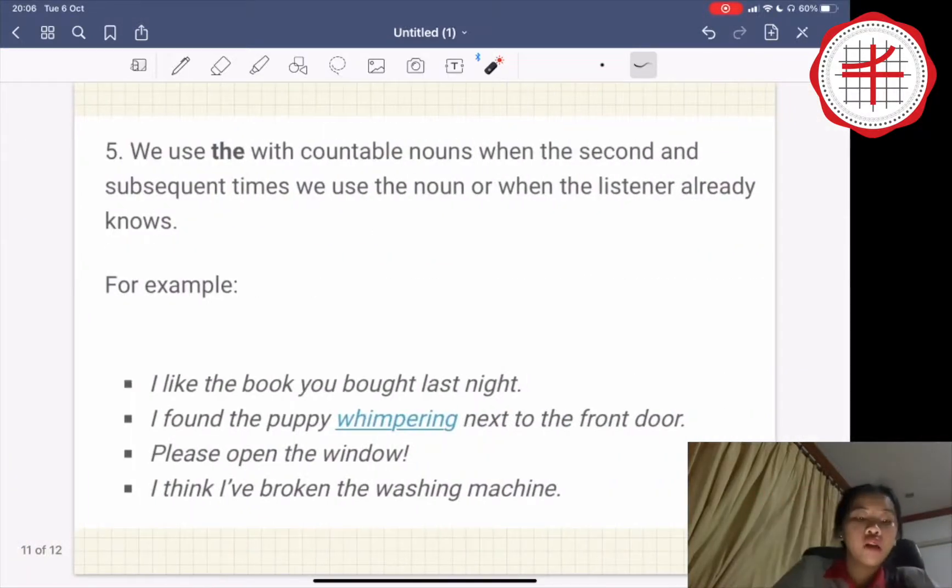The last one, we use the with countable nouns when the second and subsequent times we use the noun or when the listener already knows. For example, I like the book you bought last night. I found the puppy whimpering next to the front door. Please open the window. I think I've broken the washing machine like this.